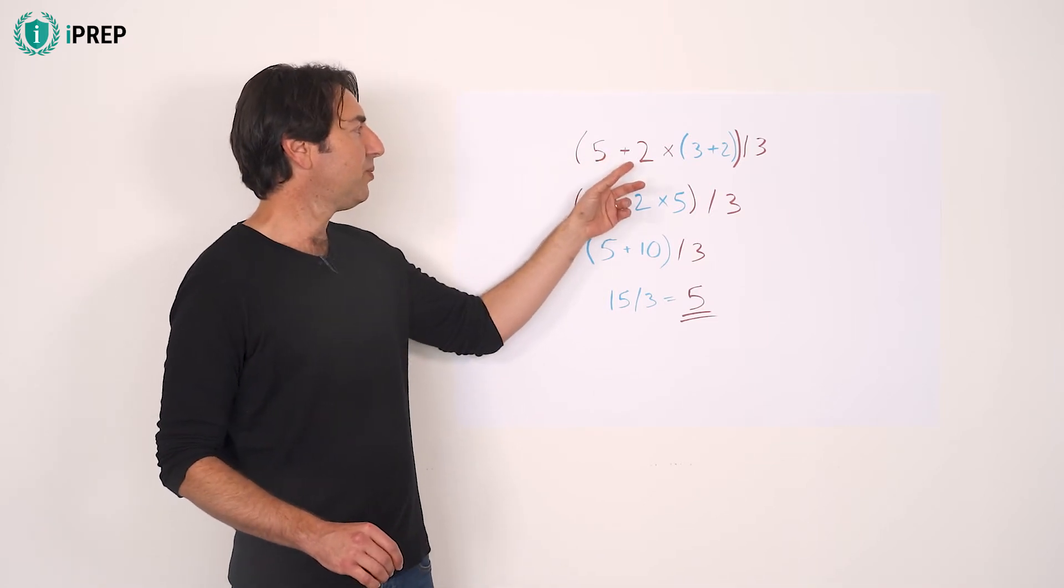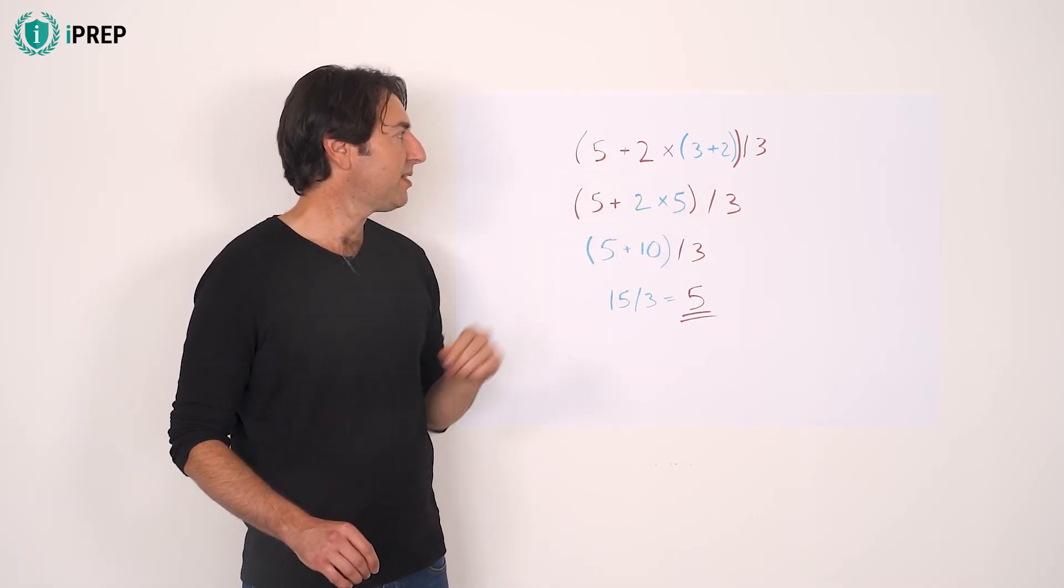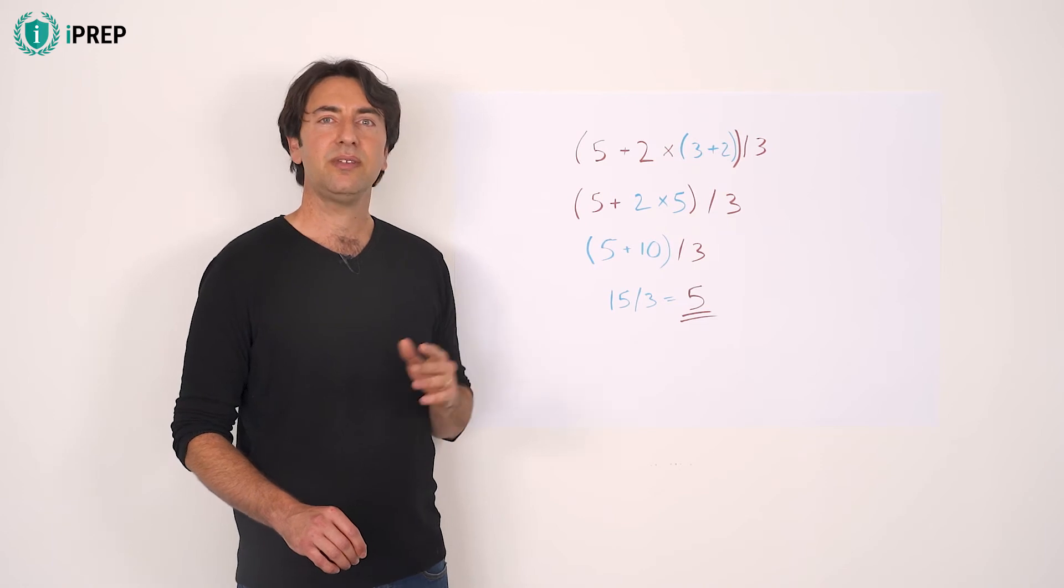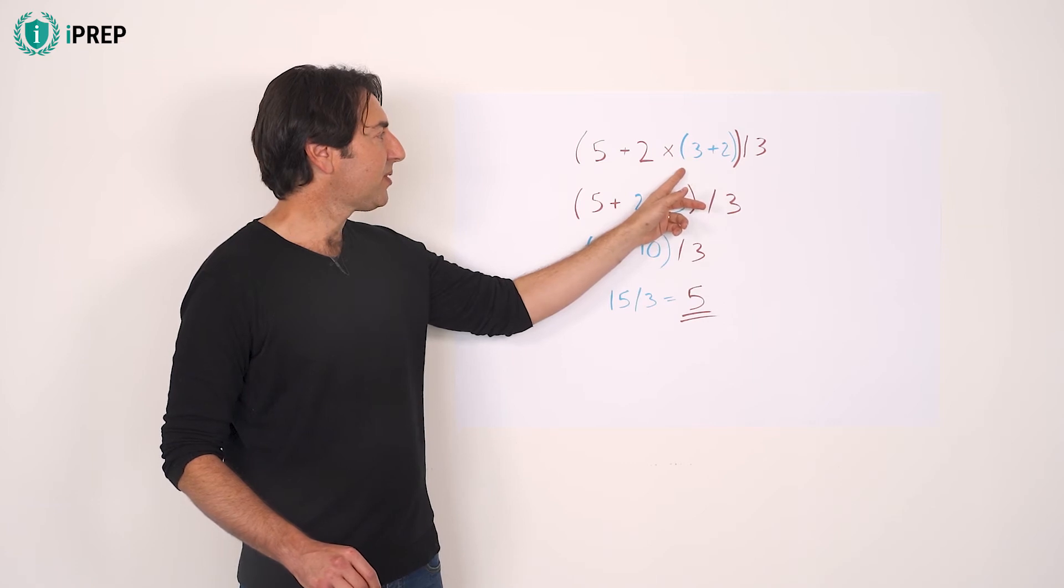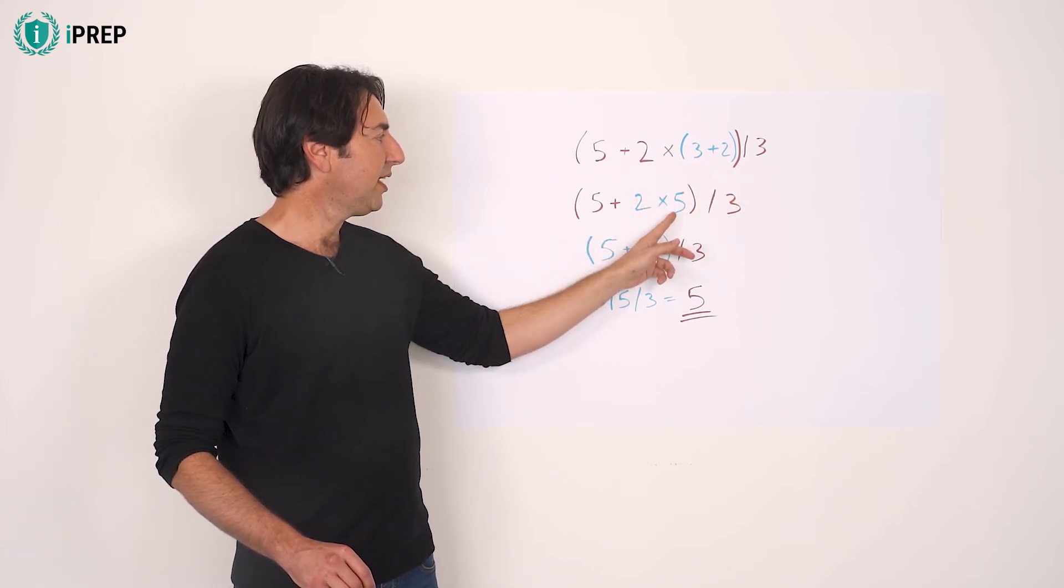5 plus 2 times 3 plus 2 in parentheses, all divided by 3. The inner parentheses comes first. 3 plus 2 equals 5.